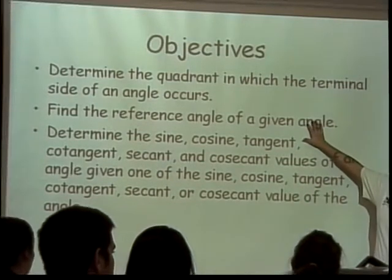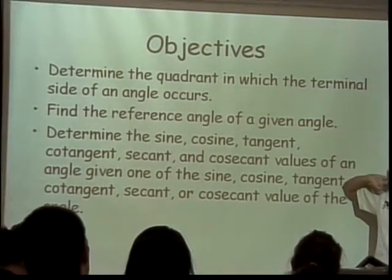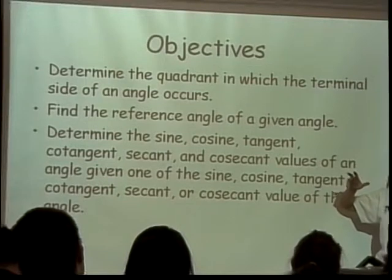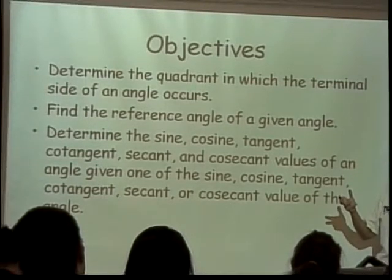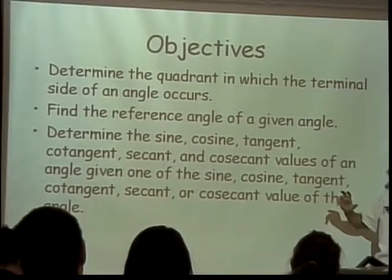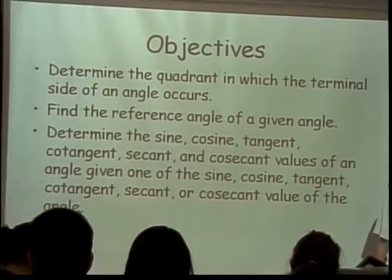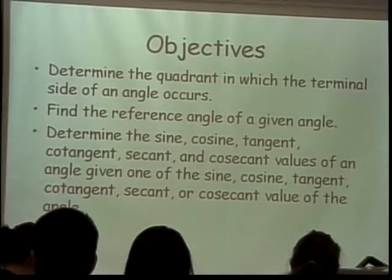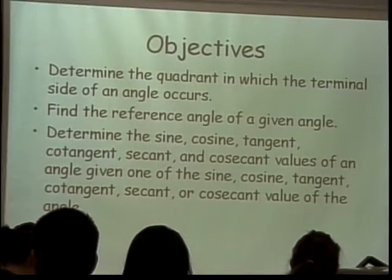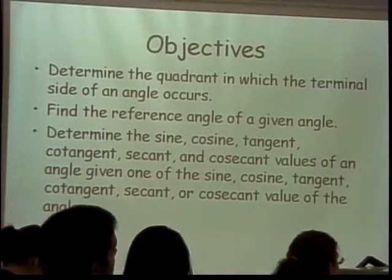We are going to need to find something called a reference angle, which is going to tell us which of the trig functions that we already know we should be using. And then we're going to do sines, cosines, tangents, and all of that stuff for angles that we're given and some that we're not, but then it won't matter. We'll just figure it out based on what we have.